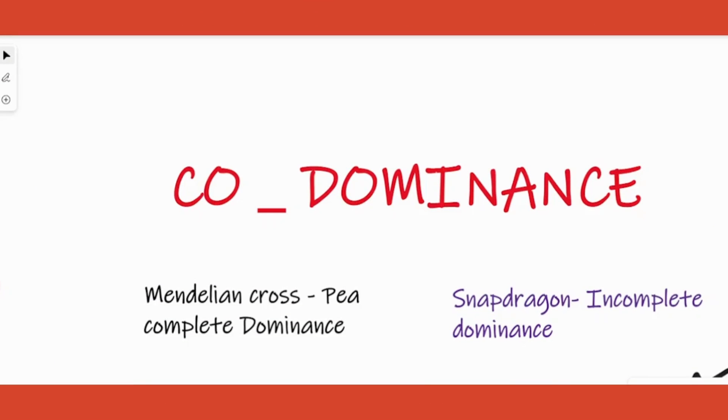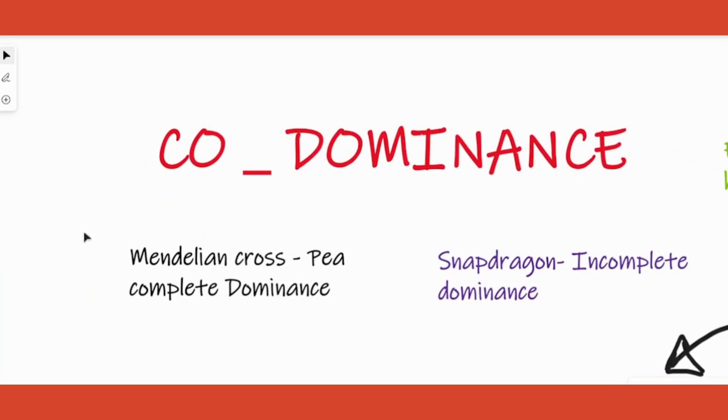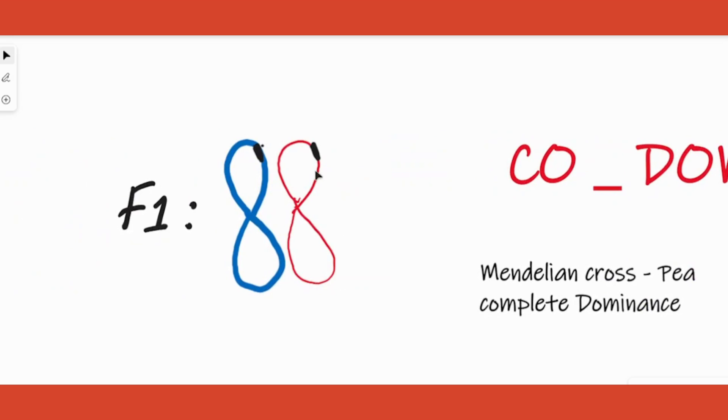Students, the topic we are going to learn today is co-dominance. Before that, let us recap what is meant by complete dominance. In case of complete dominance, among the two alleles of a particular gene, one will be dominant. In case of incomplete dominance, on the other hand, both alleles are not dominant; instead, they produce a combined effect.